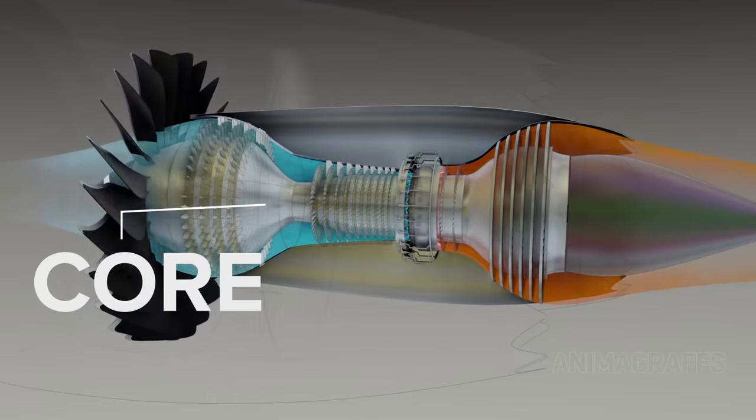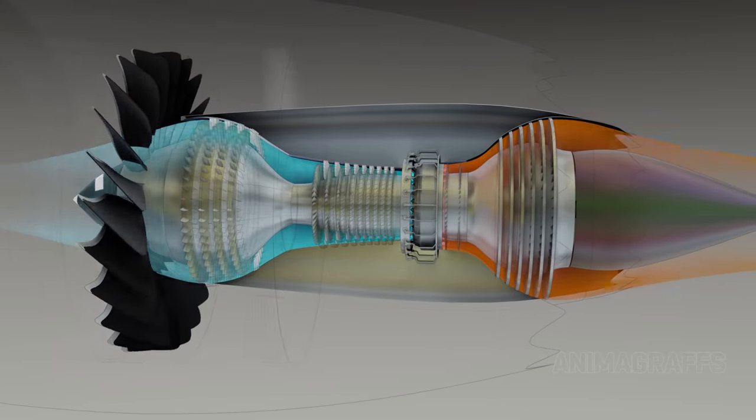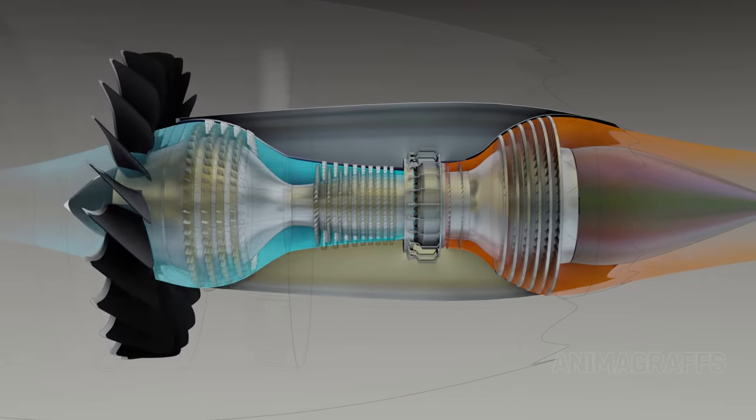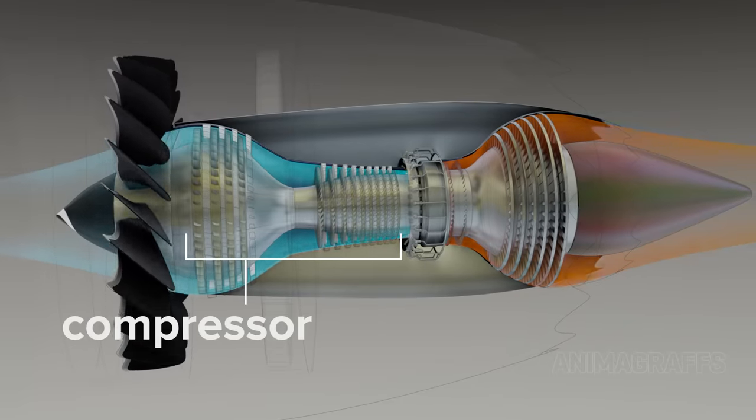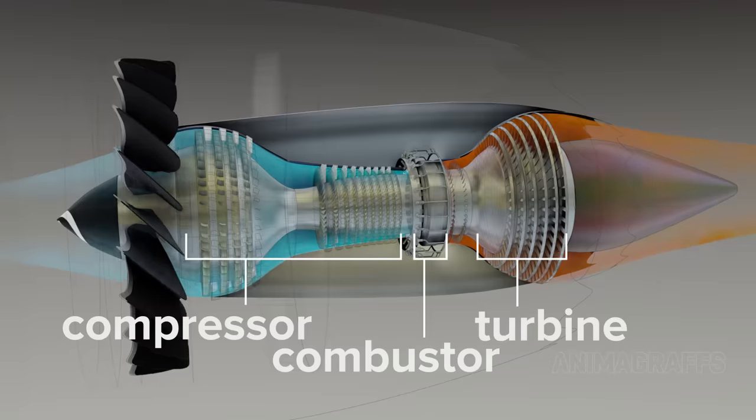The core. The core of a jet engine is a gas generator that creates high-pressure gas to power a turbine. This setup has compressor, combustor, and turbine sections.